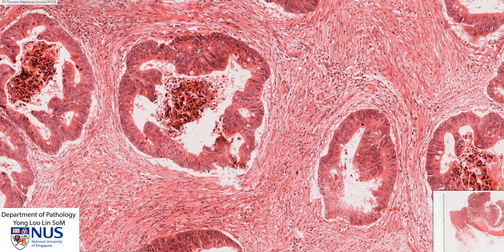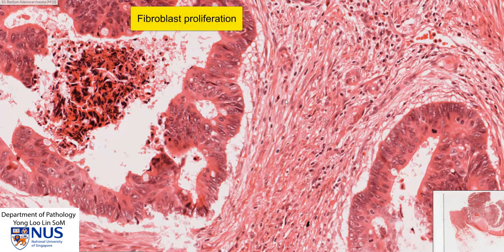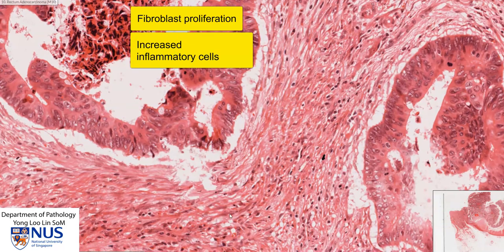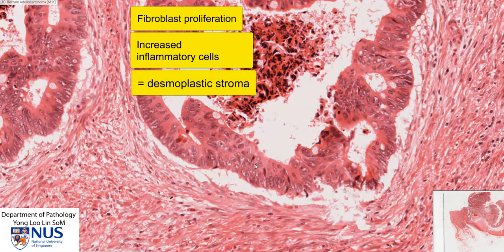The stroma around these invasive neoplastic malignant glands is rather active — it is more cellular than regular submucosa. There are more plump to spindle cells, which are fibroblasts, and there are also inflammatory cells with small nuclei: some are lymphocytes, and there are a few neutrophils as well. The stroma is rather cellular, disturbed, and disrupted. This is known as desmoplastic stroma, and it usually occurs in the context of invasive tumors.